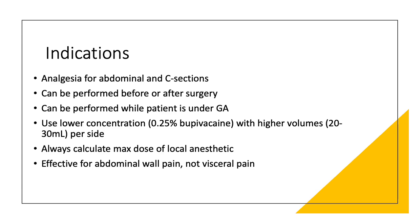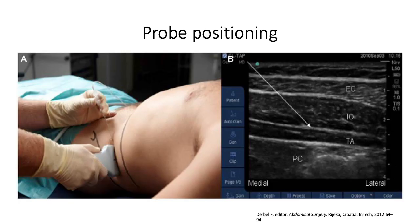Also remember that TAP blocks are good for abdominal wall pain but not visceral pain associated with C-sections and other abdominal surgeries. For the lateral TAP block probe positioning, you typically use the curvilinear probe — you can also use the linear probe if the patient is relatively lean. You want to place the probe between the iliac crest and the costal margin at the mid-axillary line, as shown in the picture on the left.